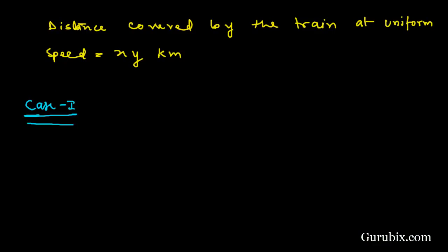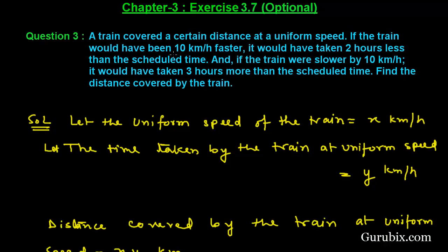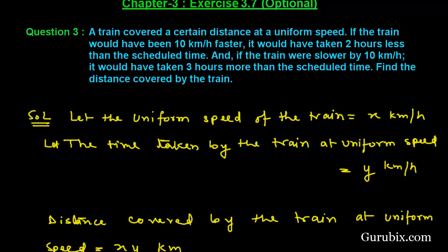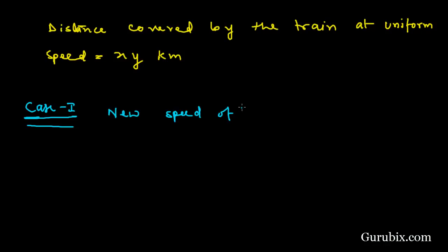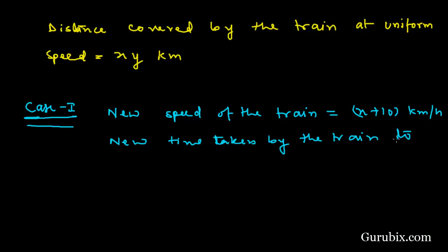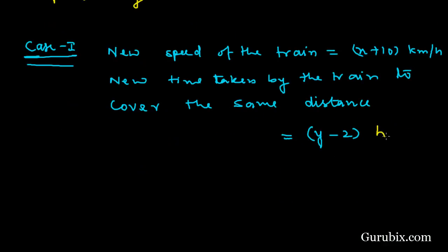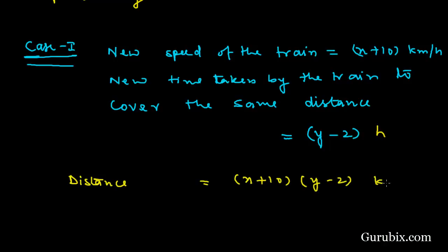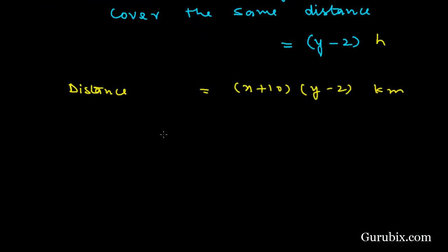Now we shall discuss Case 1. If the train would have been 10 km per hour faster, the new speed of the train is x plus 10 km per hour. Then the new time taken by the train to cover the same distance would be y minus 2 hours. Therefore, the distance equals (x + 10) multiplied by (y − 2) km. But the distance is also x·y, so we set these equal.